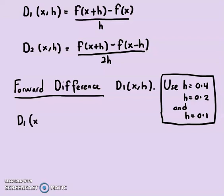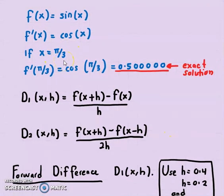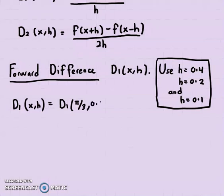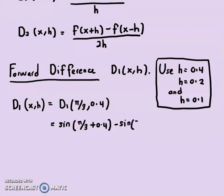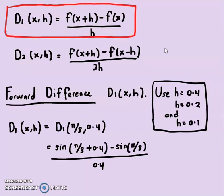For D1(x, H) where x = π/3, we know cos(π/3) = 0.5. For H = 0.4, we compute: [sin(π/3 + 0.4) − sin(π/3)] / 0.4. Using your calculator, you should get 0.315865.